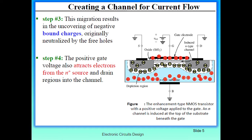This migration will result in uncovering the negative bond charges originally neutralized by the free holes. Here you will see these negative bond charges appear. The positive gate voltage will also attract electrons from the N-plus source and drain regions into the channel. Here you can see this is the source region and this is the drain region, and this positive voltage will attract electrons from these N-plus regions.